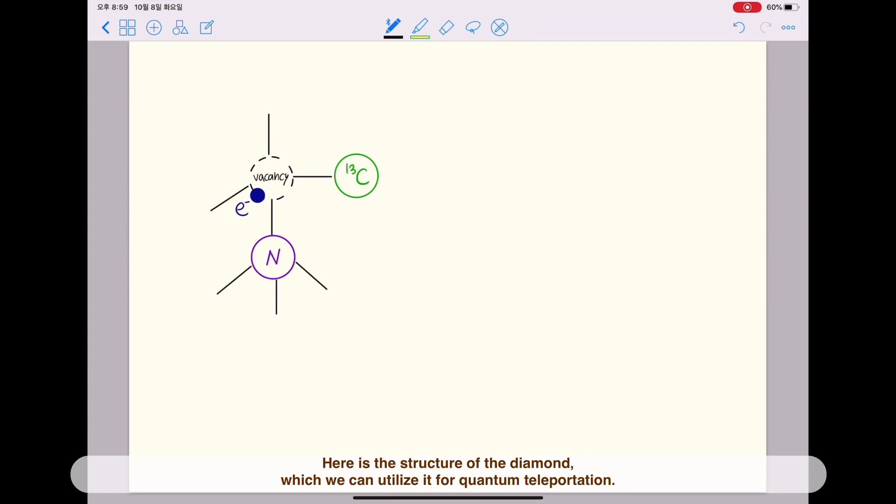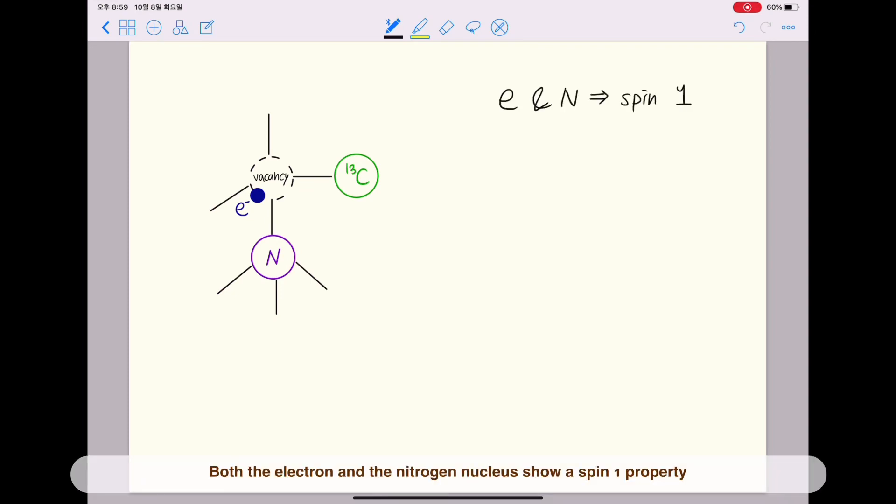Here is the structure of the diamond, which we can utilize for quantum teleportation. Negative charged nitrogen vacancy center in diamond consists of a nitrogen impurity and an adjacent vacancy, where the triplet state electron is localized.